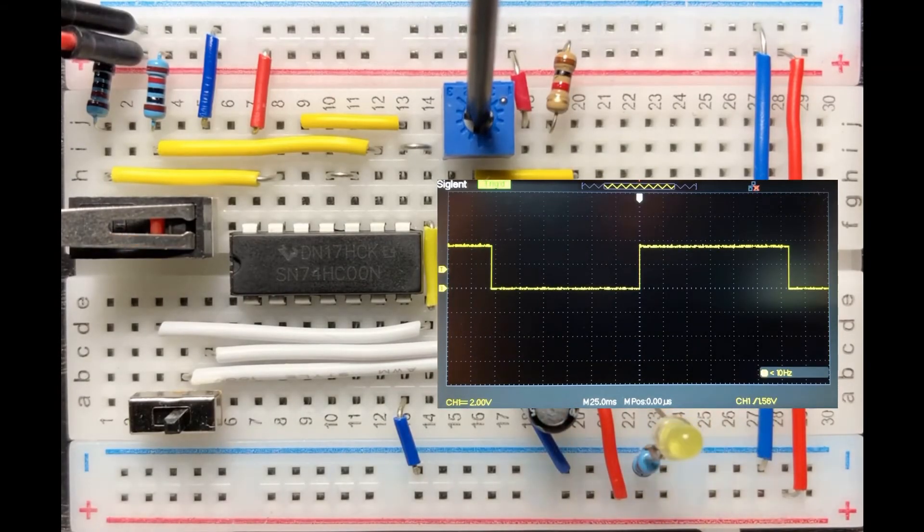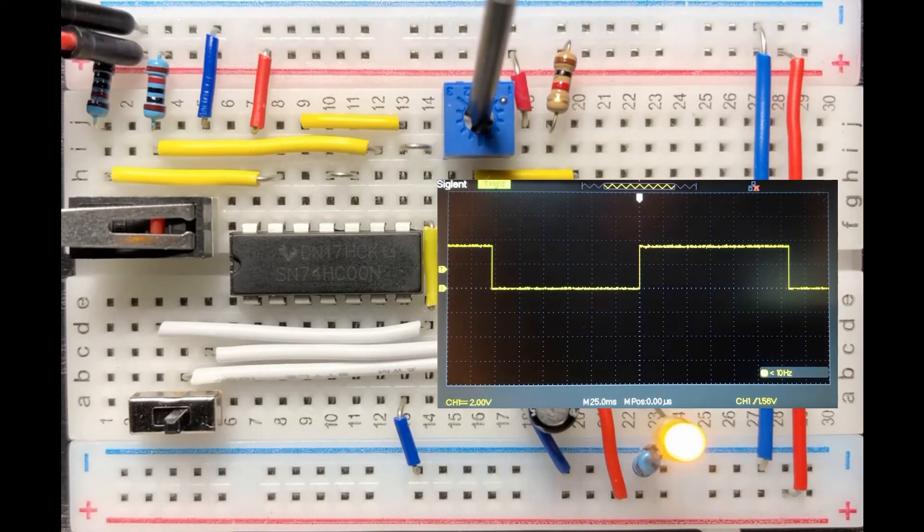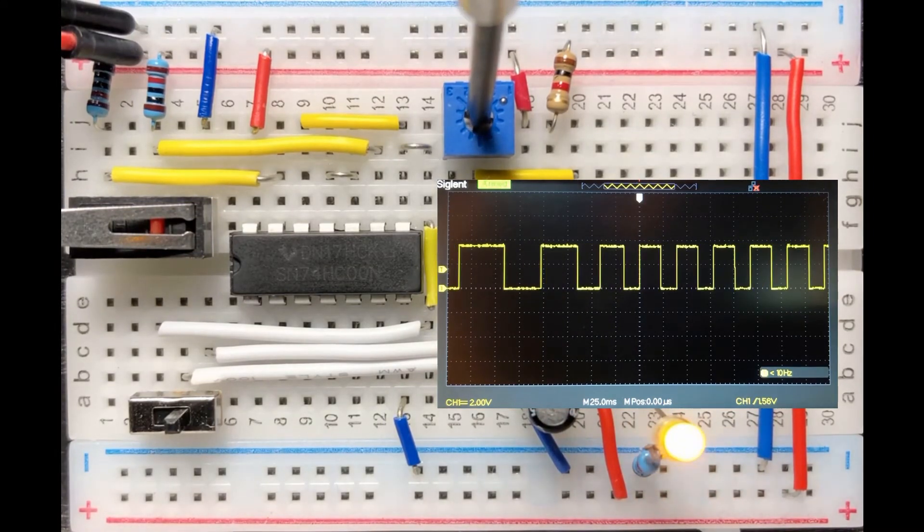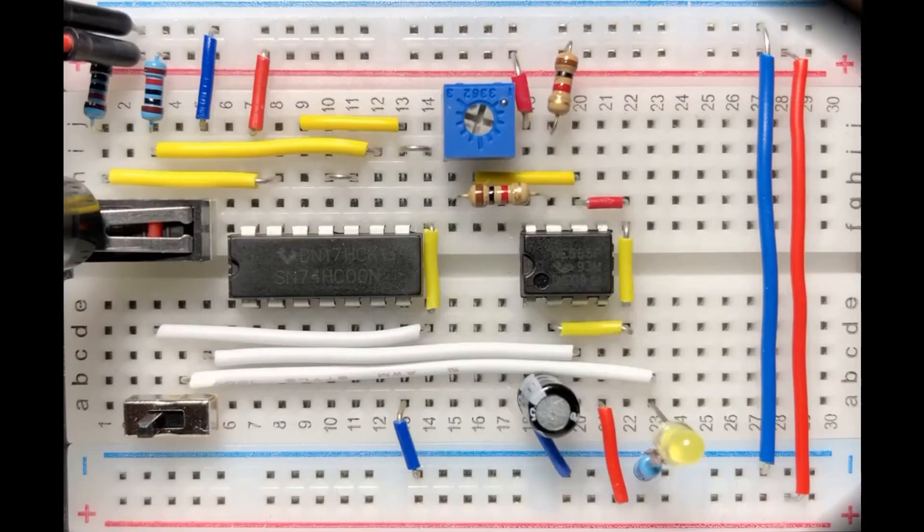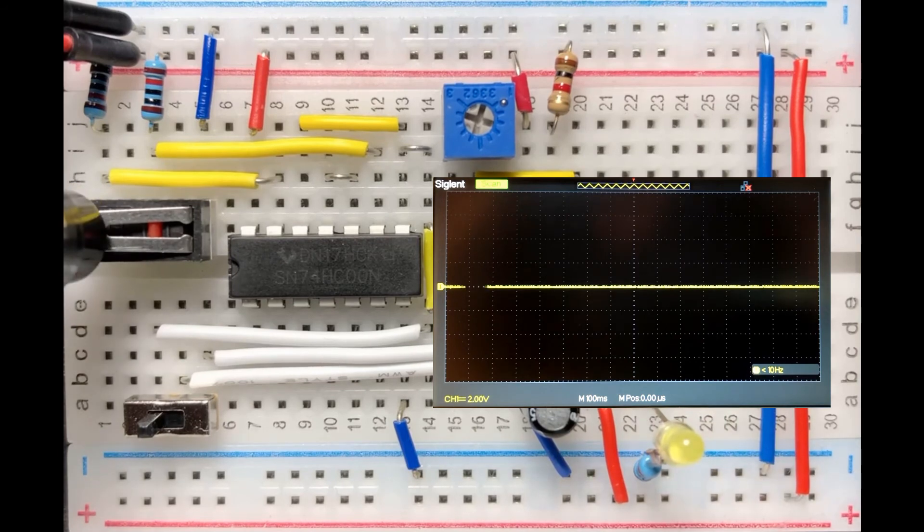A quick demo of the circuit. The circuit here is generating a free running clock. And here the circuit is generating a single step clock signal.